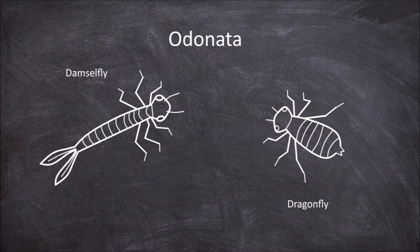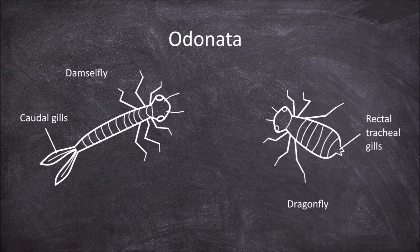In dragonflies the larvae breathe through rectal tracheal gills within the body. Damselflies on the other hand breathe through caudal gills extending from the end of the abdomen. The body of damselfly larvae are more slender and the body of the dragonfly larvae are stockier.